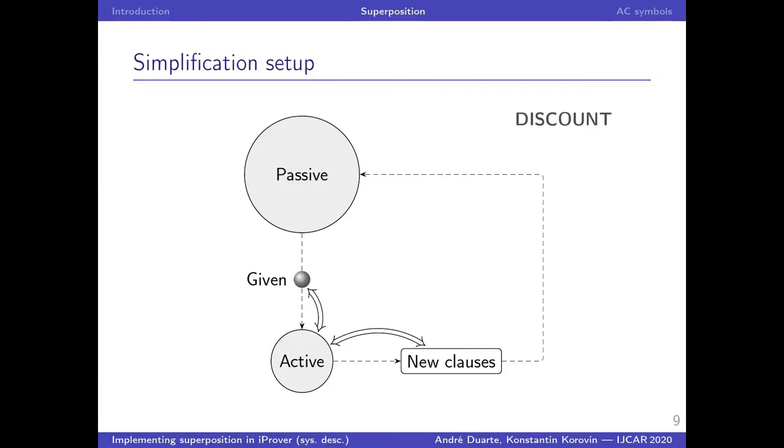So discount chose to simplify only with respect to the active set. The new clauses and the given clause are simplified, but only with the active set. The passive set remains truly passive and not participating in simplification inferences. So the advantage is that simplifications are done much more quickly. But the disadvantage is that passive clauses are not participating in such simplifications.